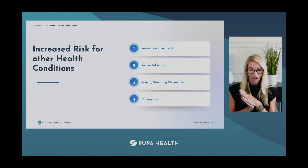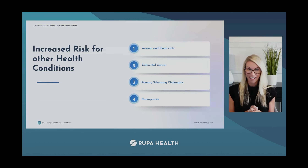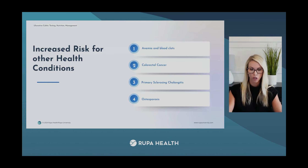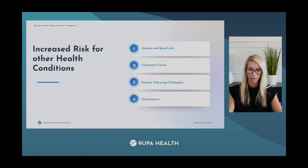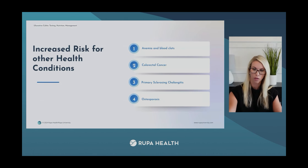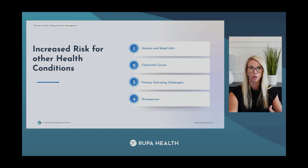Ulcerative colitis is not benign and does increase risk for other health conditions. These include anemia, blood clots, colorectal cancer, primary sclerosing cholangitis — a type of chronic liver disease — and osteoporosis, generally due to nutrient malabsorption. We'll talk about that more later.